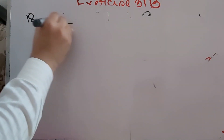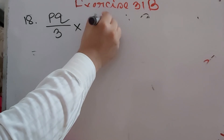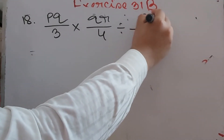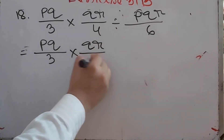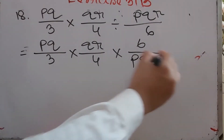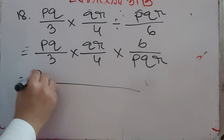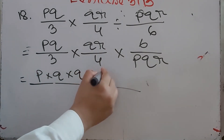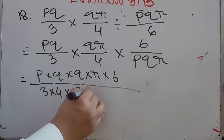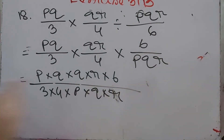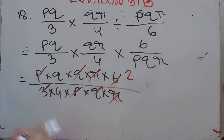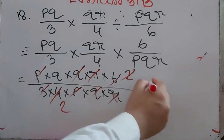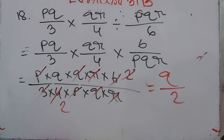Number 18: pq/3 multiplied by qr/4 divided by pqr/6. Multiply pq/3 × qr/4 × 6/pqr. Expanding: p×q×q×r×6 over 3×4×p×q×r. Cancel r by r, q by q, p by p, 6 by 3 = 2, 4 by 2 = 2. Answer is q/2.